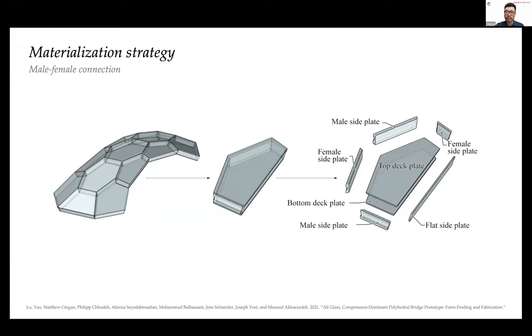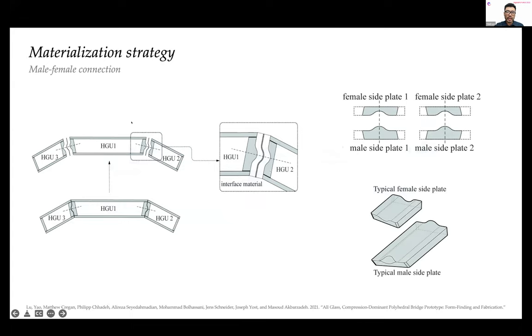Each unit has a top deck plate, bottom deck plate, and several side plates. We tried to use one centimeter annealed glass as much as possible. But for some side plates, we had to make them thicker to accommodate male and female connection mechanisms to avoid relative sliding between neighboring hollow glass units. All side plates are unique, and we had to use cast glass and 5-axis water jet cutting. Although unique, all female side plates share the same master profile and all male plates share another. So we only need to cast two different types.